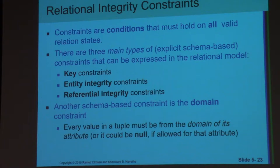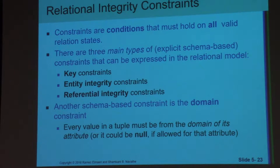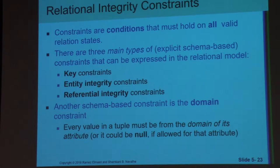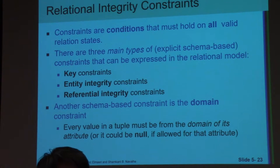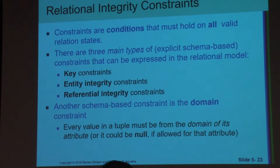You already know what the key constraint is — each and every relation should have a key attribute. In the ER model, the key attribute is one that can identify, search, or specify the entity data. Sometimes there are many key attributes, sometimes not — that is okay. However, the relational model must have a key attribute in the relation.